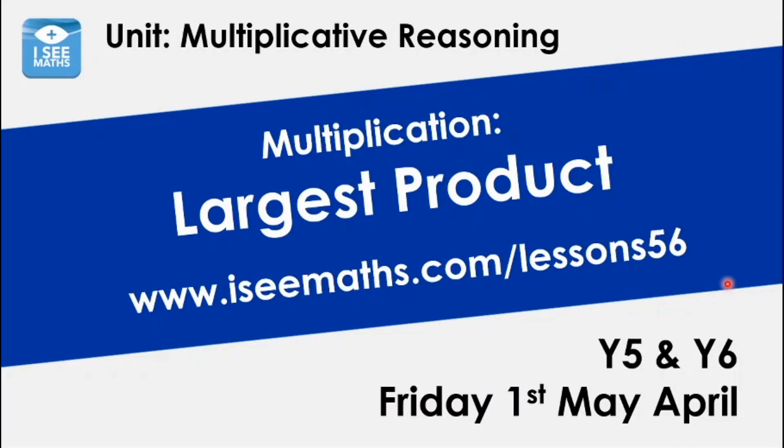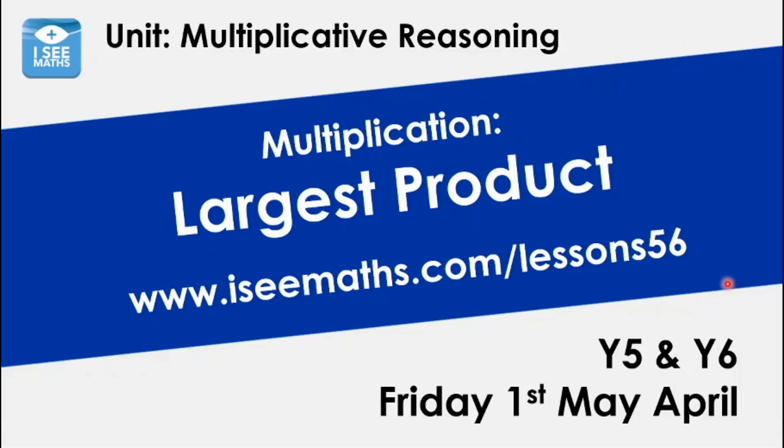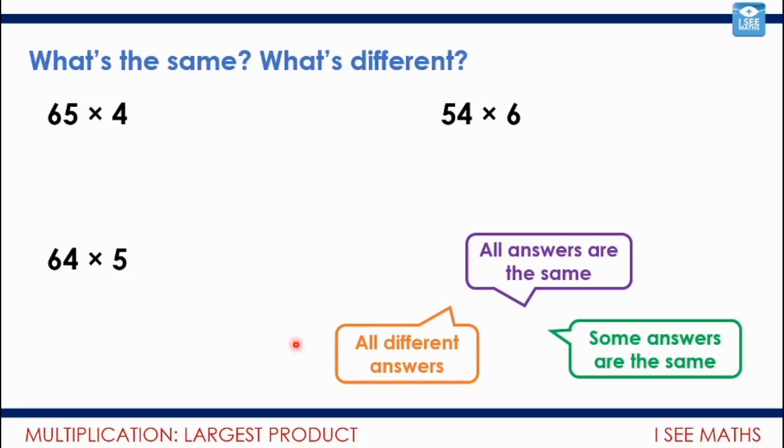The title is called The Largest Product. The product is when two numbers are multiplied together. We're looking, how do we make a product as large as possible? For this question, I deliberately don't want to give you very long. Don't pause the video. Just have a look. I want you to tell the screen what's the same and what's different. What's the same and what's different about these calculations? Don't work out the answer. Hopefully you've talked about what's the same and you've noticed what's different. I wonder what you've noticed about perhaps the digits that are the same and the kinds of calculations that we have.